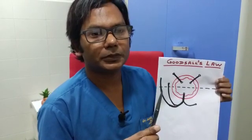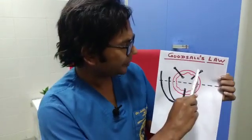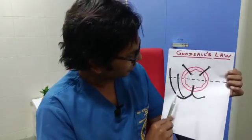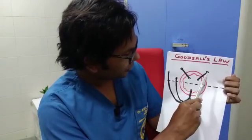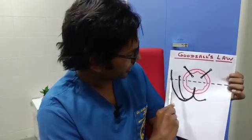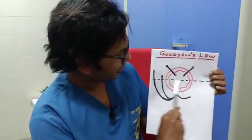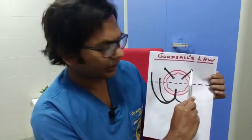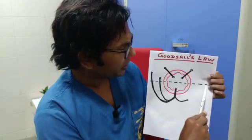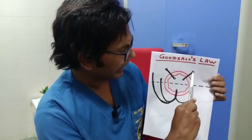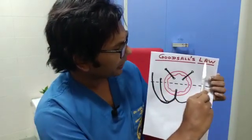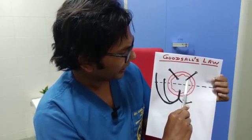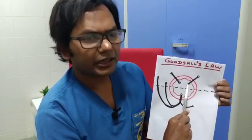The external opening is visible over the buttock, or towards the scrotum or the sacrum side. Suppose the external opening is situated anterior to this imaginary horizontal line. As per Goodsell's law, if the external opening is situated anterior to this imaginary horizontal line, then the fistula's tract will be straight and will open inside the anal canal in a straight path.